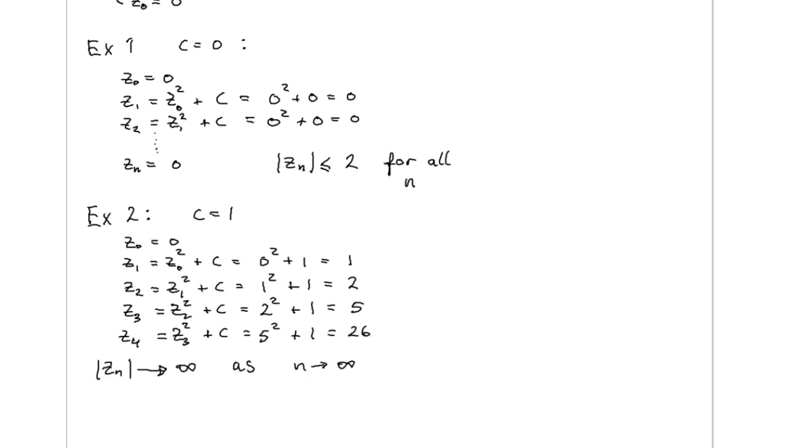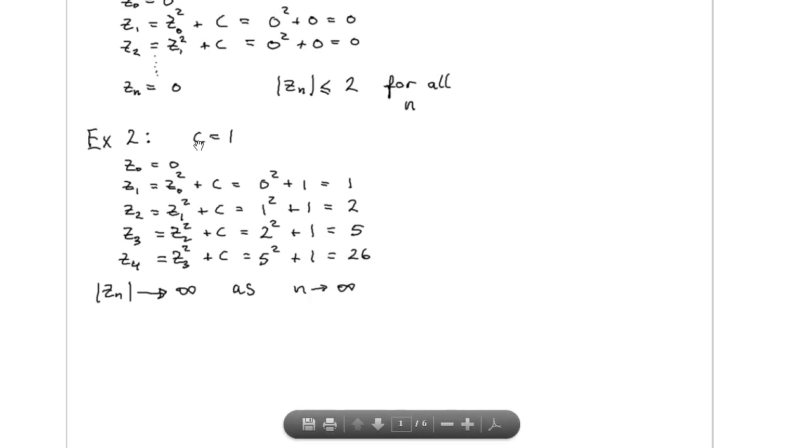Let's consider another example where C is equal to 1. We start with the first element, z_0 equal to 0, and the second element, z_1, is the first element squared plus C, which is 1, so we have 0 plus 1 is 1.